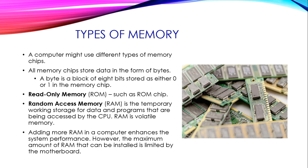A computer might use different types of memory and many different types of memory chips. All memory chips store data in the form of bytes. The smallest unit of data is called a bit, and 8 bits form a byte. A byte is a block of 8 bits stored as either 0s or 1s in binary language, where 0 means off and 1 means on. In the memory chip, read-only memory (ROM) and random access memory (RAM) is the temporary working storage for data and programs being accessed or in use by the CPU.